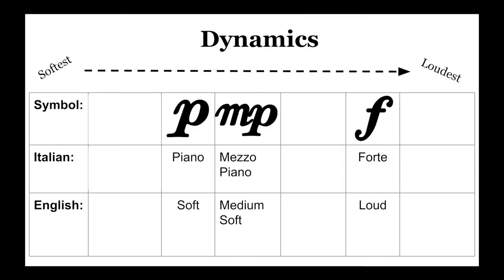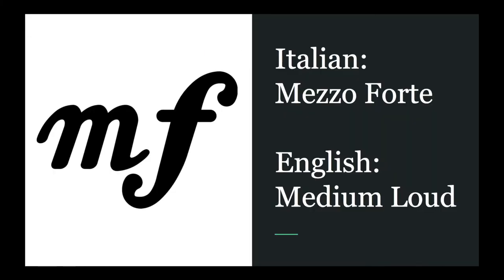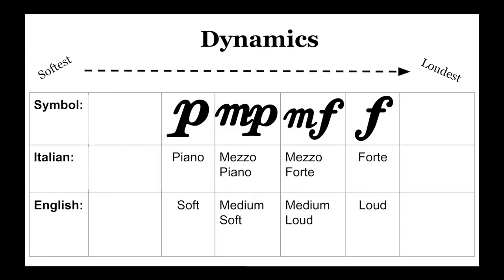Here we have placed mezzo piano in our dynamics chart. It is louder than piano, but softer than forte. Here we have MF. Just like mezzo piano, we can modify forte to be mezzo forte. This means medium loud. We have added in mezzo forte to our dynamics chart. As you can see, the softest volume level we have learned is piano, followed by mezzo piano, mezzo forte, and forte.